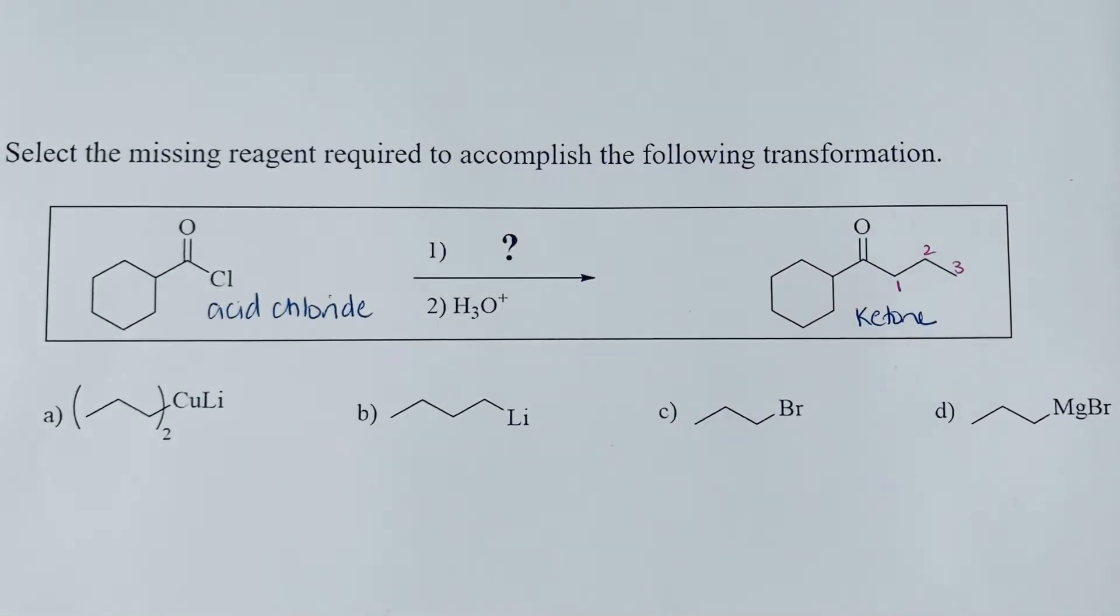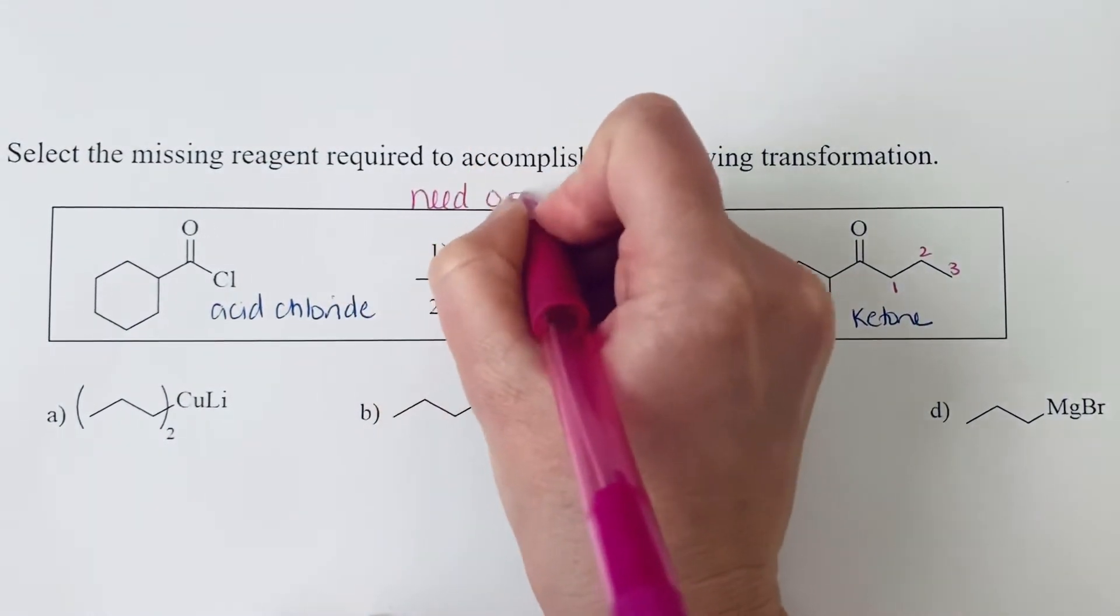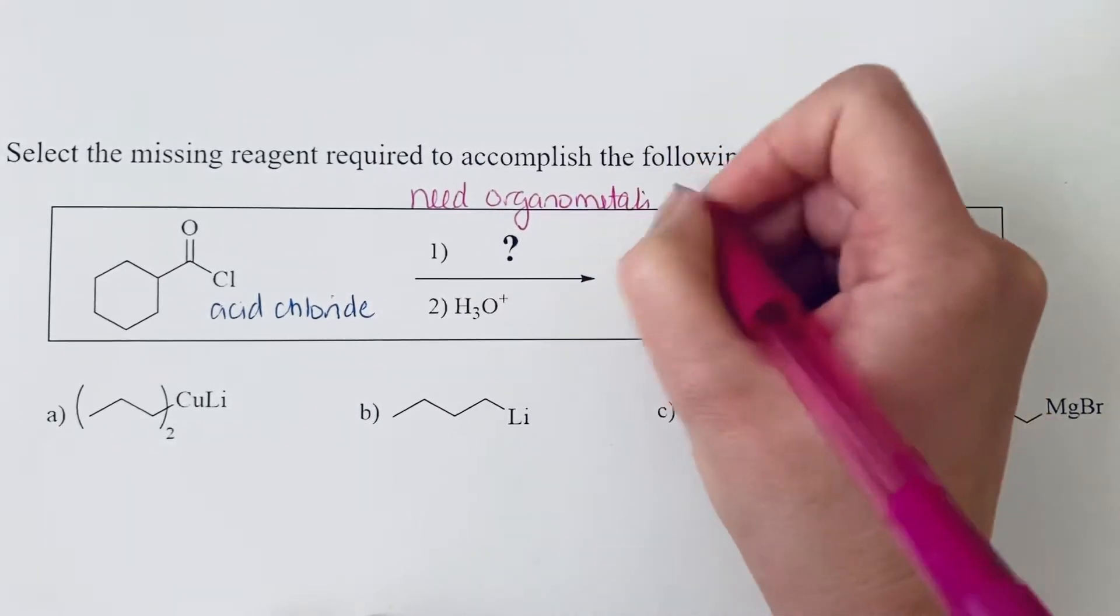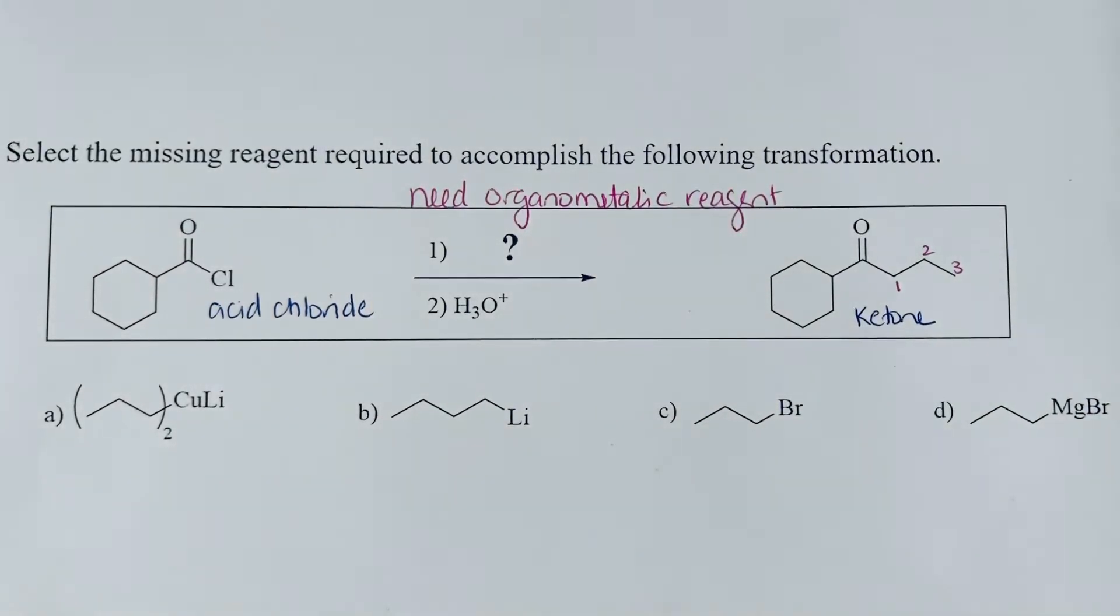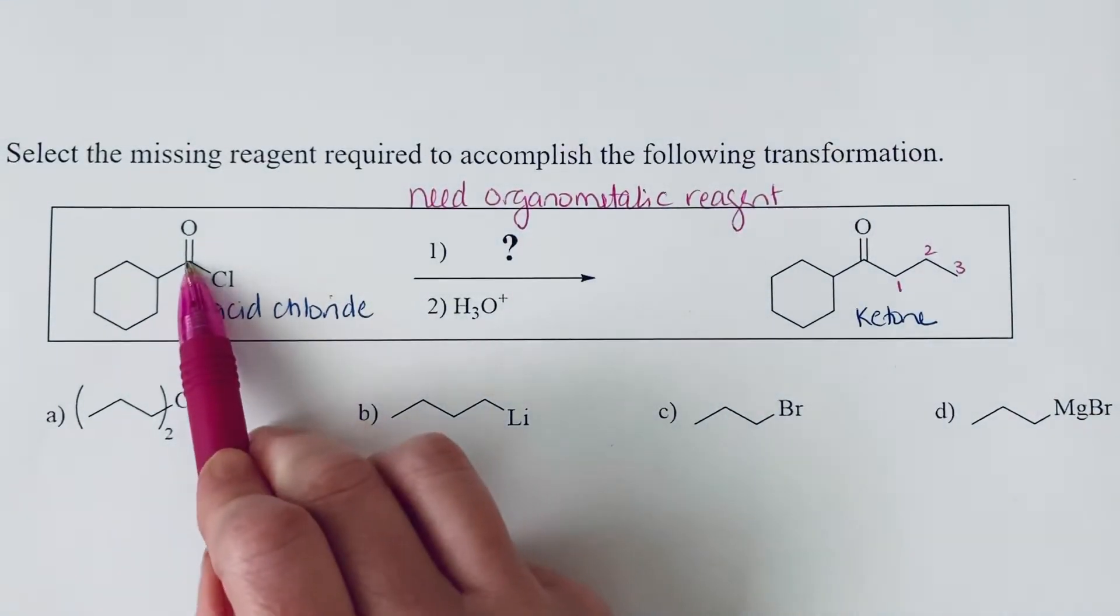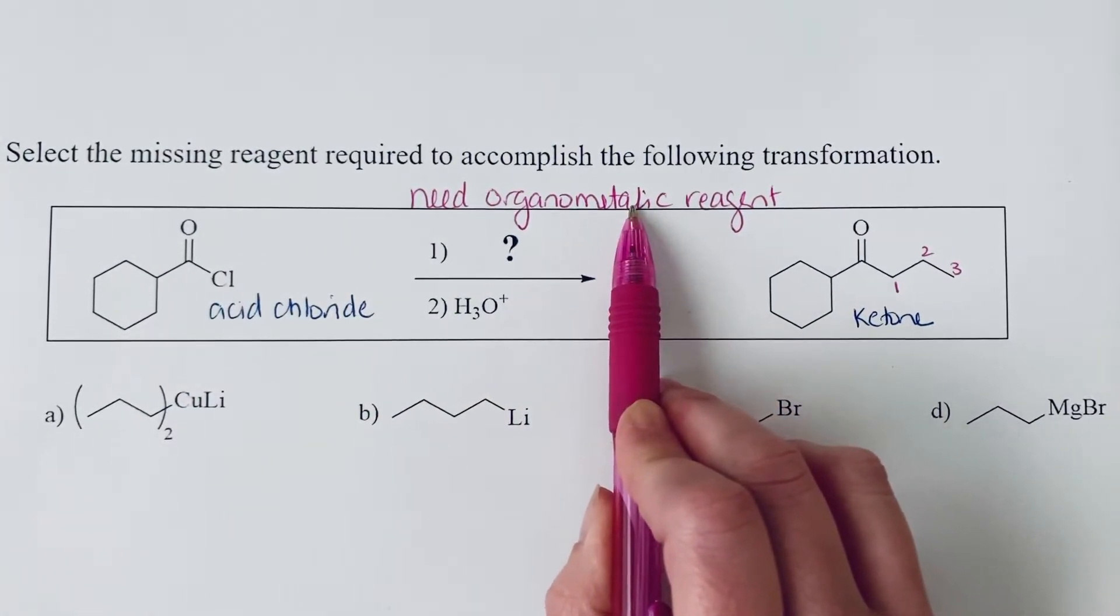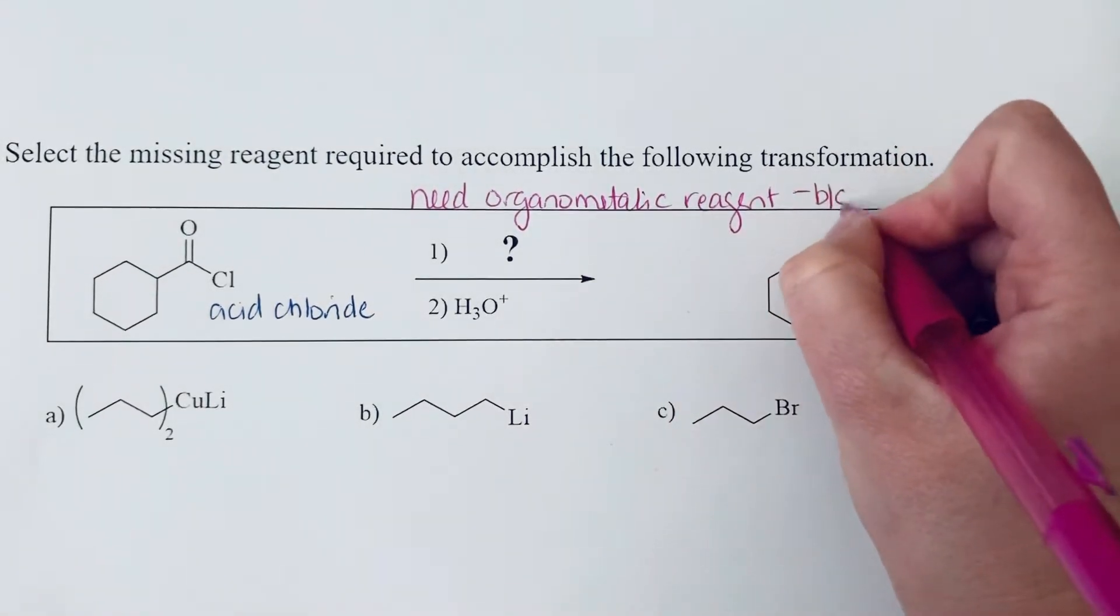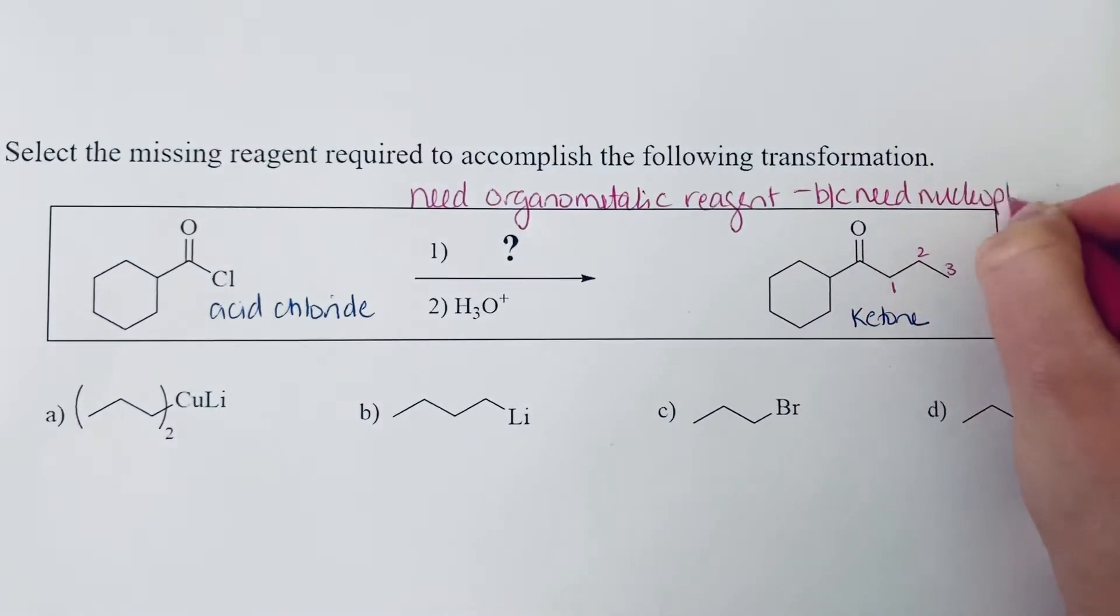So what we need to use here to do this is we need an organometallic reagent. And that's what we need to form that carbon-carbon bond because we have a carbon that's electrophilic. The reason why we know we need an organometallic reagent is we need a carbon atom that is nucleophilic, because we need a nucleophilic carbon.